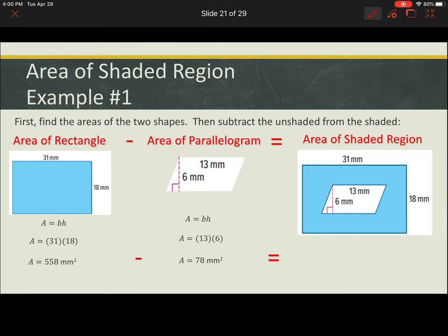Now to find the area of the shaded region, we're going to subtract. We take the area of the rectangle, the shaded region, subtract the area that is not shaded, which is the parallelogram, and we get an area for the shaded region only of 480 millimeters squared.